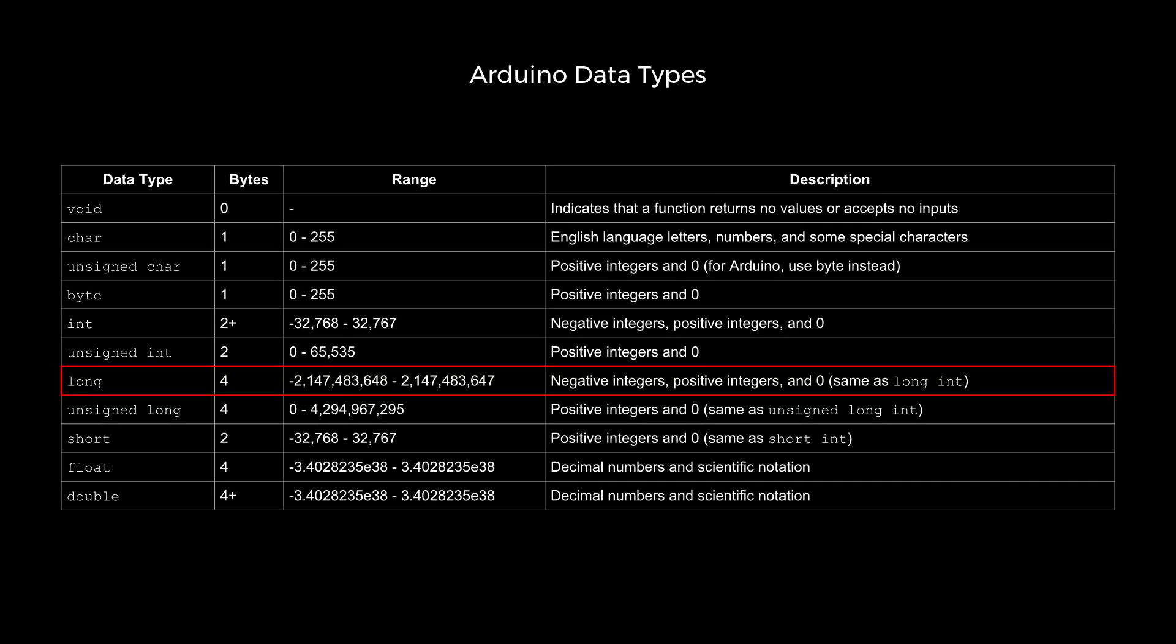You can also use the keyword unsigned to force characters and integers to be positive only. So an unsigned long can be zero to around positive four billion. On some systems, double is a floating point number that takes up twice as much memory as a float. However, on our Uno and Redboard, a double is essentially the same as a float.